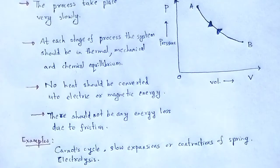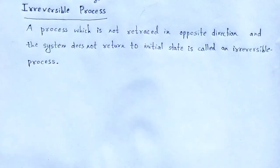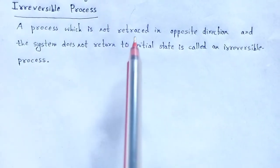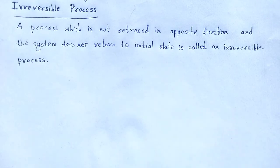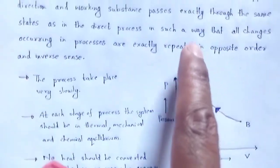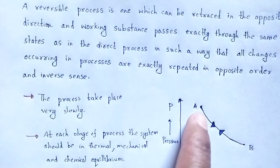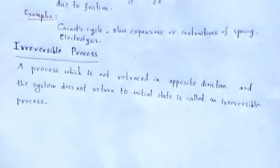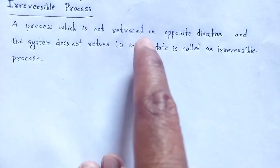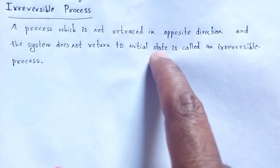Next, what is an irreversible process? A process which cannot be retraced in opposite direction, and the system does not return to its initial state, is called an irreversible process. In case of an irreversible process, when we retrace that process in opposite direction, the system does not return to its initial state. So that type of thermodynamic process is said to be an irreversible process.